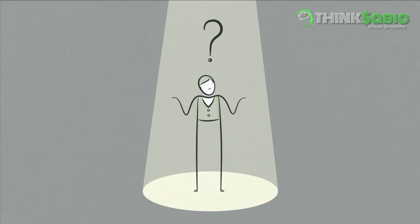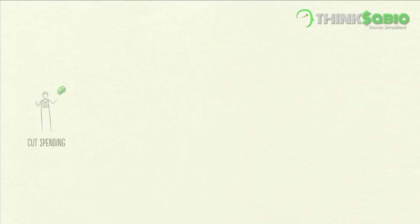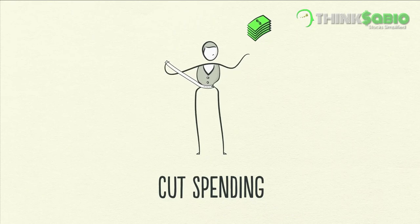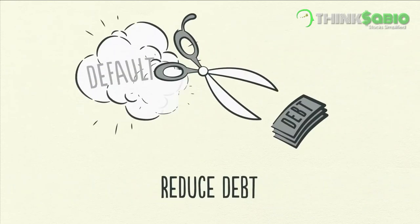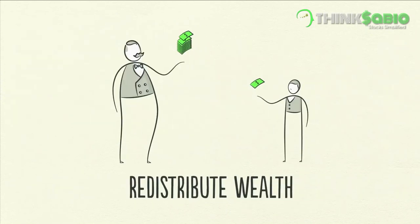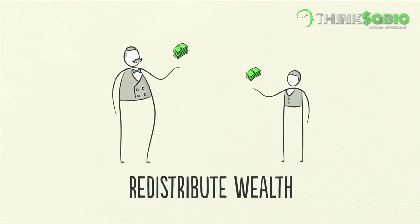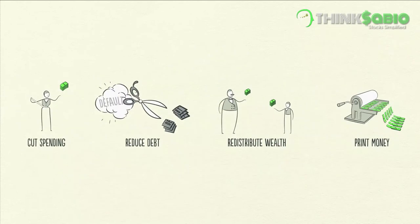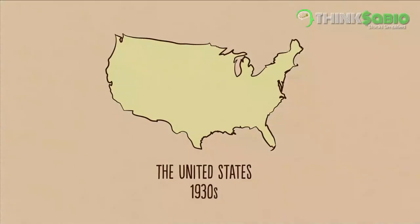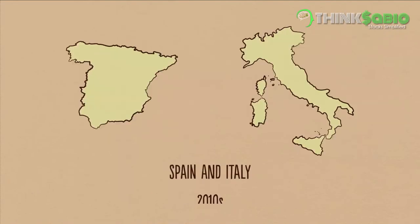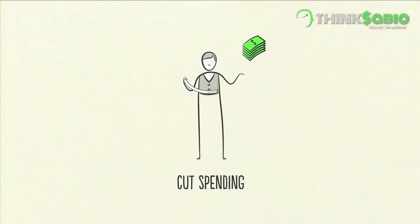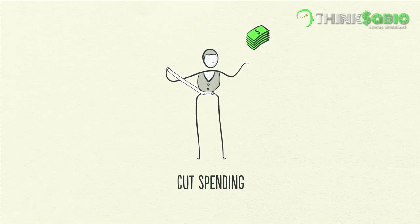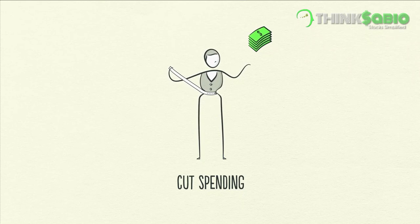The problem is debt burdens are too high and they must come down. There are four ways this can happen: one, people, businesses, and governments cut their spending; two, debts are reduced through defaults and restructurings; three, wealth is redistributed from the haves to the have-nots; and four, the central bank prints new money. These four ways have happened in every deleveraging in modern history. Usually, spending is cut first — people, businesses, and even governments tighten their belts and cut their spending so that they can pay down their debt. This is often referred to as austerity.